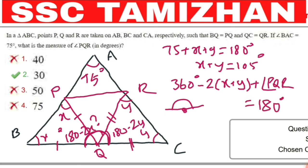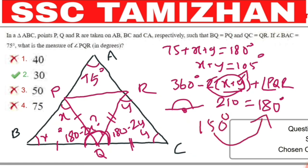Substituting x plus y equals 105, we get 2 times 105 equals 210. So angle PQR equals 360 minus 210 equals 150 degrees. Therefore angle PQR is 150 degrees.